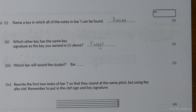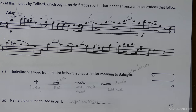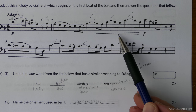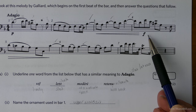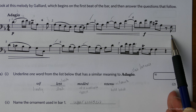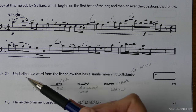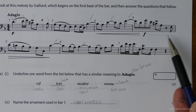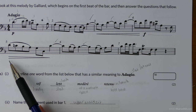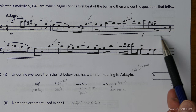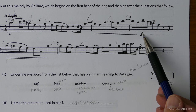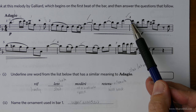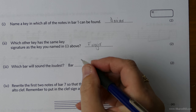Which bar will sound the loudest? We've got a big long crescendo here, then this is forte — the whole bar stays forte. Although this bar starts off quite loud at the same volume, it's fading away. So overall, bar four is the louder bar because it stays loud throughout the whole bar.